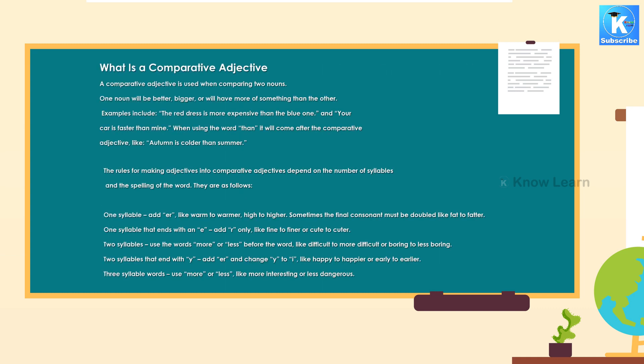What is a comparative adjective? A comparative adjective is used when comparing two nouns. One noun will be better, bigger, or will have more of something than the other. Examples include: the red dress is more expensive than the blue one, and your car is faster than mine.